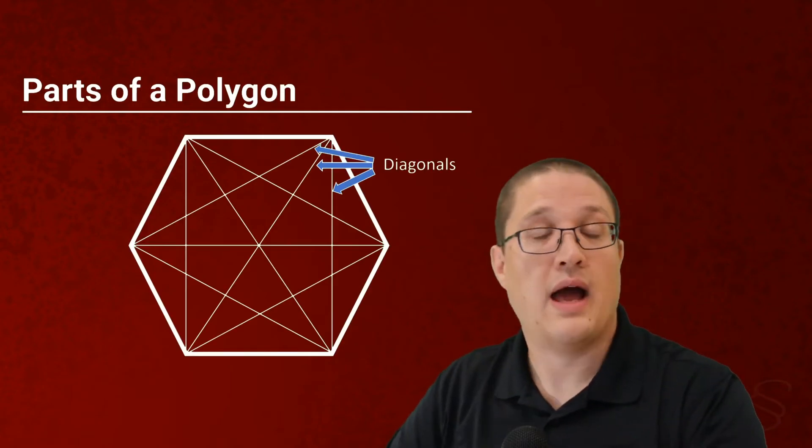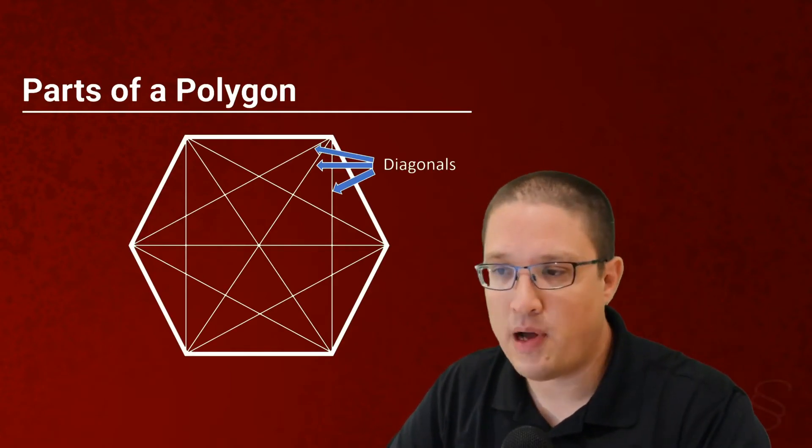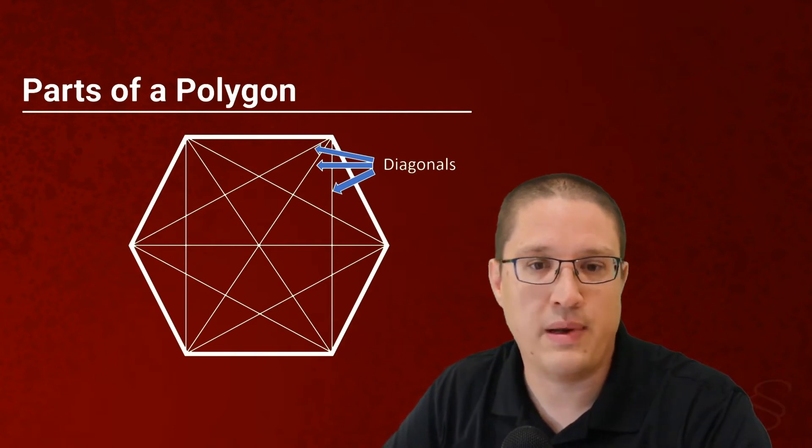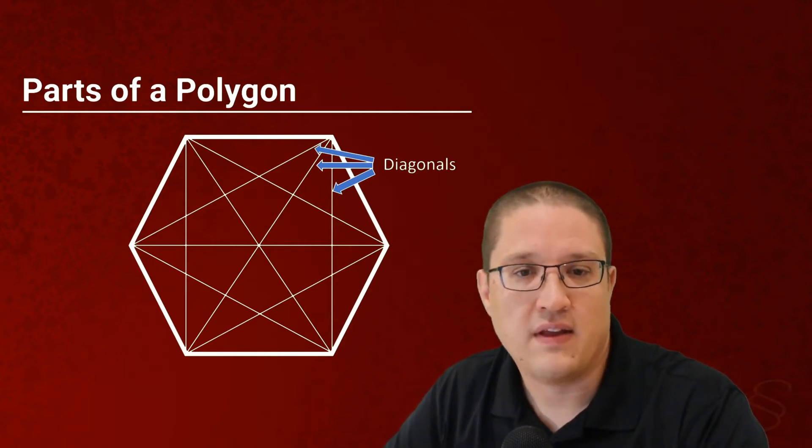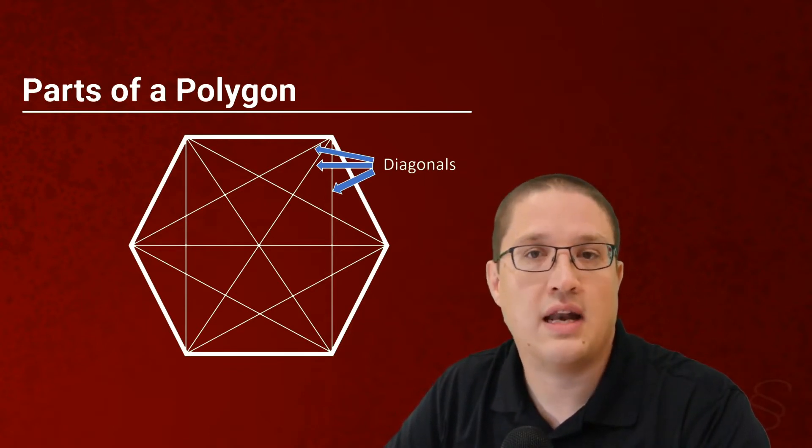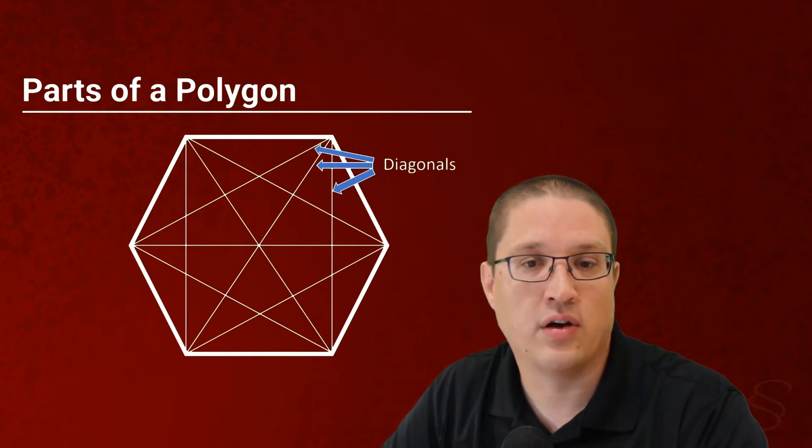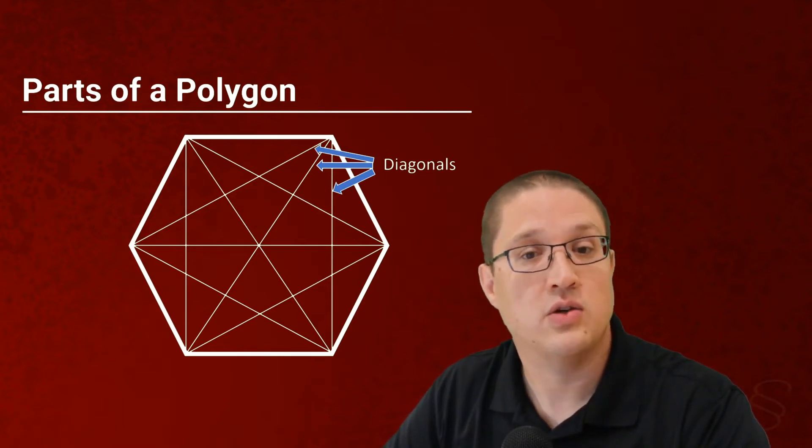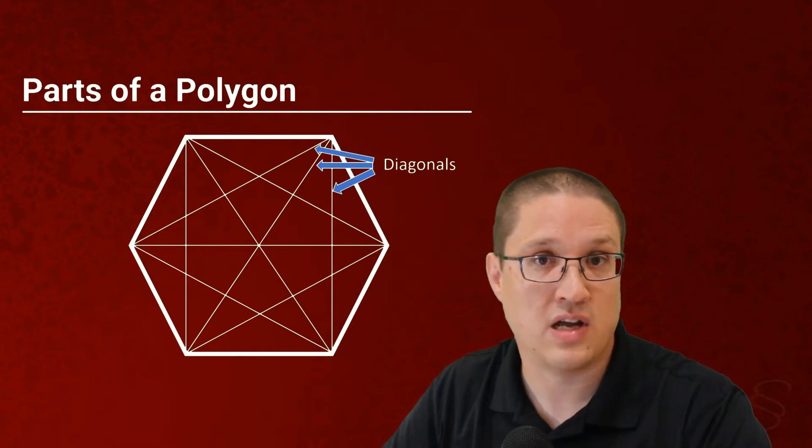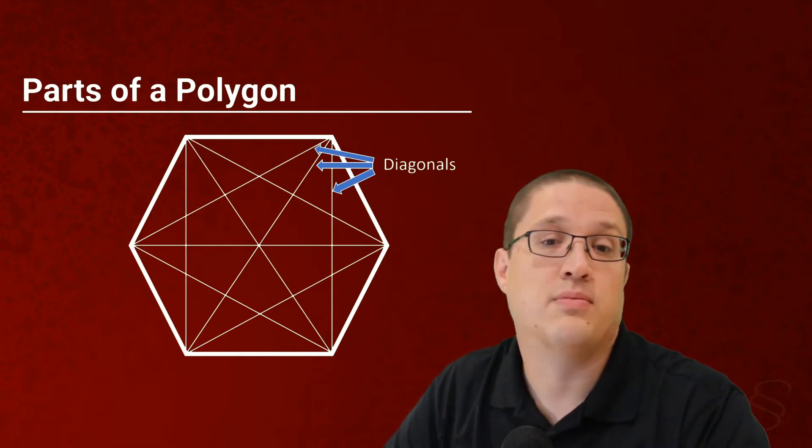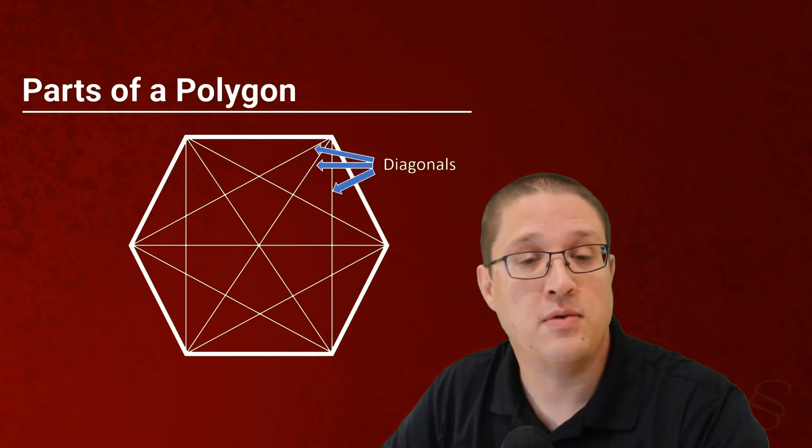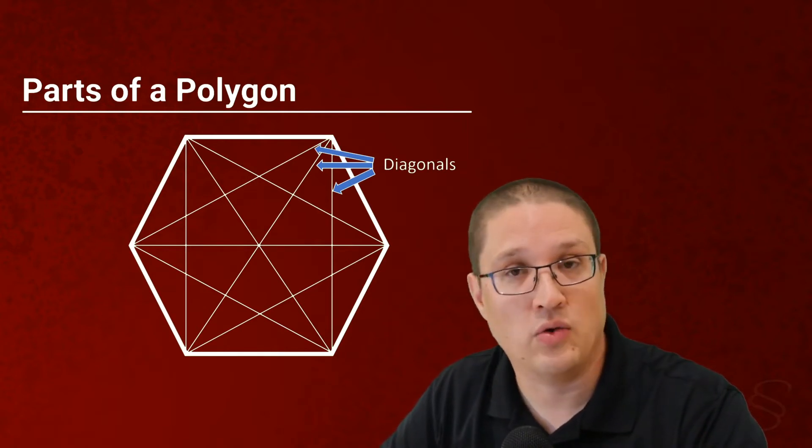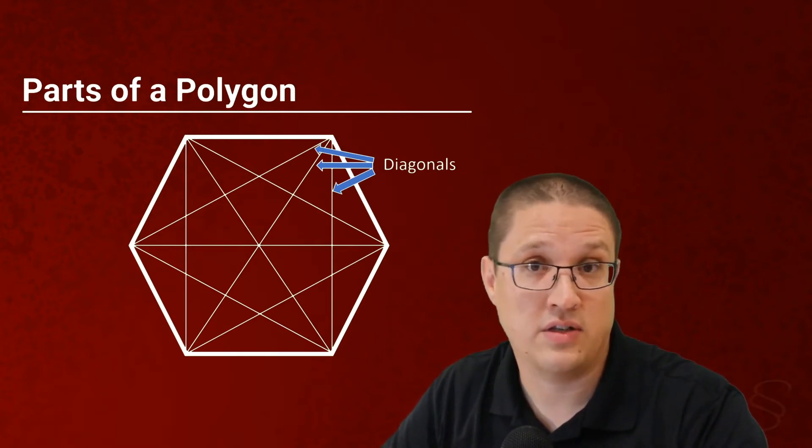We can also have diagonals. Now, diagonals is possibly the trickiest one here because you have to draw a lot of them. In the case of this hexagon, we have a lot of diagonals because you're connecting every corner to every other corner. Each corner is already connected to two sides. So in this case, you may notice that each corner has three diagonals coming off of it. This is important to double-check your counting here. You want to make sure that you're not double-counting these diagonals as you go through this.